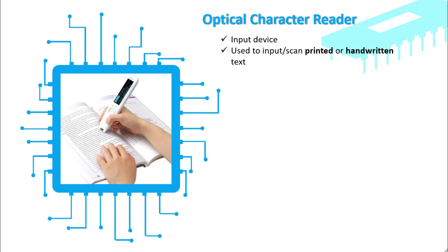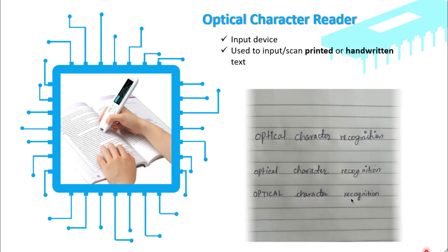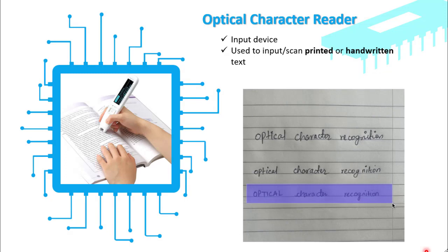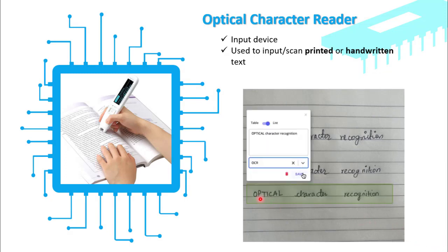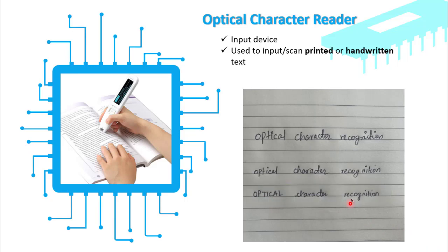For example, if you have text in a book and want to save it in written or typed form in your computer, or if you have some handwritten text you want to save in your computer, in that case you can use the optical character reader. When handwritten text is available, you can use optical character recognition to read it.